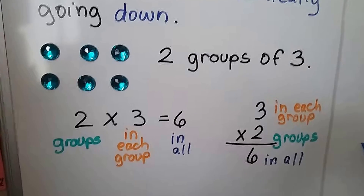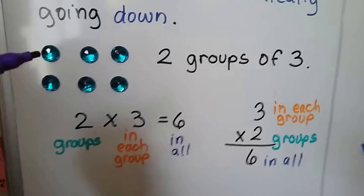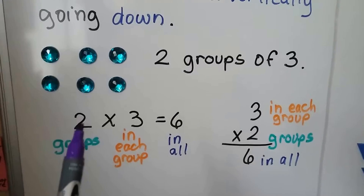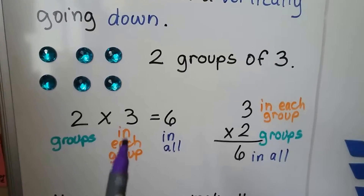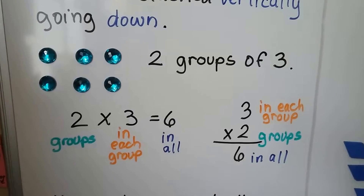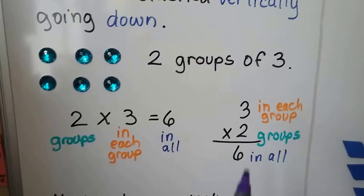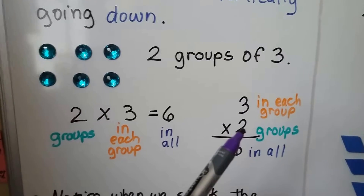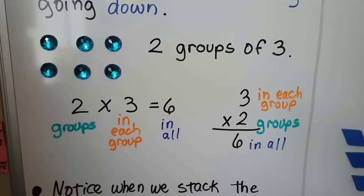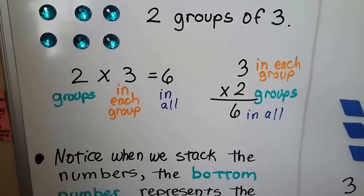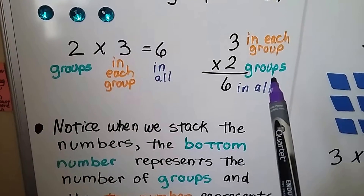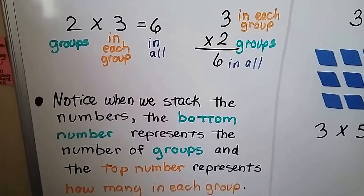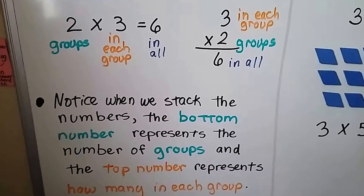Take a look at this. We can see here that we have two groups of three gems. In a number sentence, we have two groups times three in each group — we have six in all. We can write it like this stacked vertically. This is the number in each group, and this is the groups, and we have six in all.